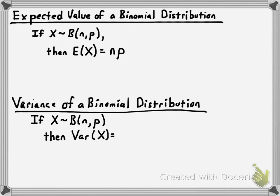Very simple. The variance of a binomial distribution is also a simple formula. We have a random variable X, binomially distributed with n trials and p chance of success. Variance is supposed to measure how far a data value is from the mean. It turns out all you have to do is calculate the mean value and multiply it by the probability of failure. So n times p times q gives you the variance of a binomial distribution, where q is the probability of failure.